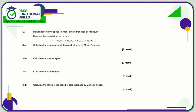Question number 3 — we want the mean speed. We're going to add all of these values together and divide by 12 because there are 12 values in total. When you add them all up, it comes to 348. And 348 divided by 12 is 29 miles per hour.